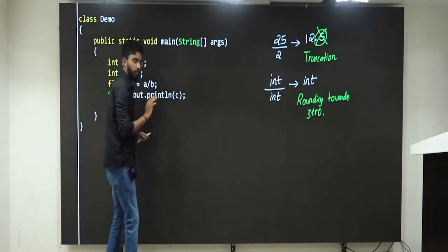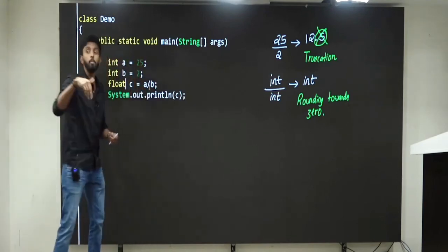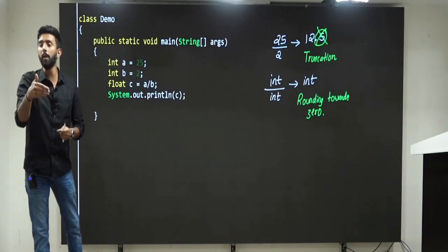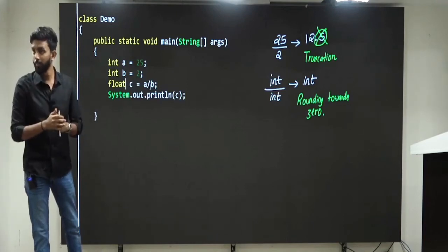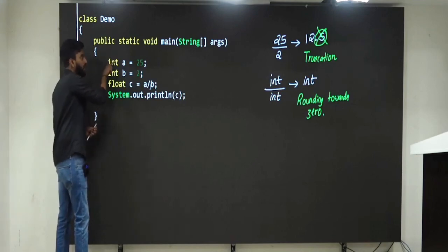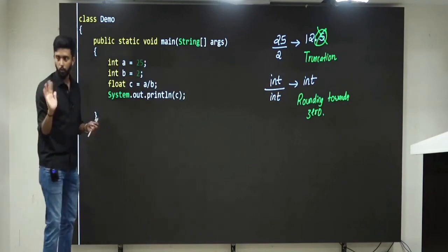So, integer by integer is another integer, but integer divided by float is not an integer. Float divided by float is not an integer, I hope you will understand. Which means you have one option, either convert A to float, or B to float, or make both as float, up to you.